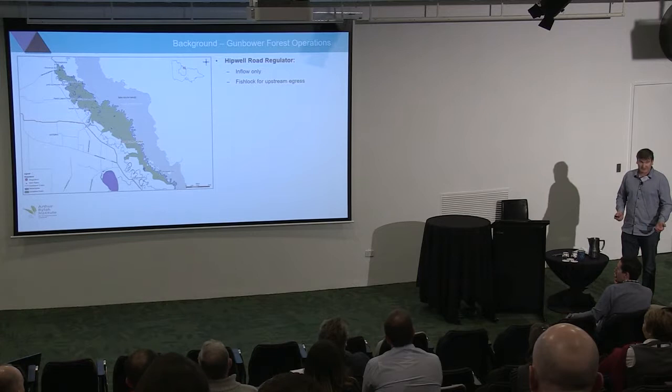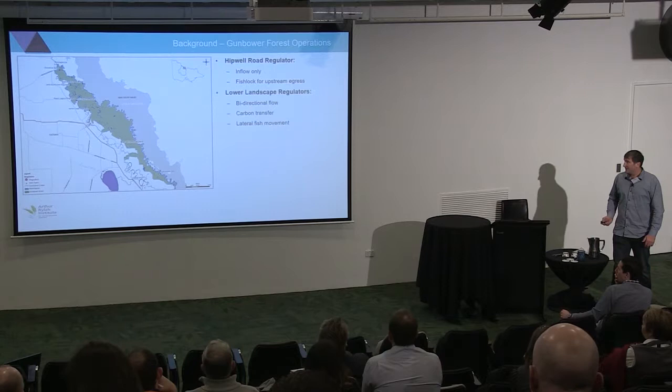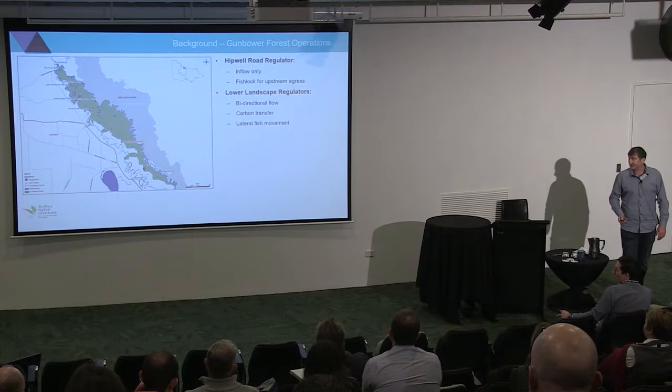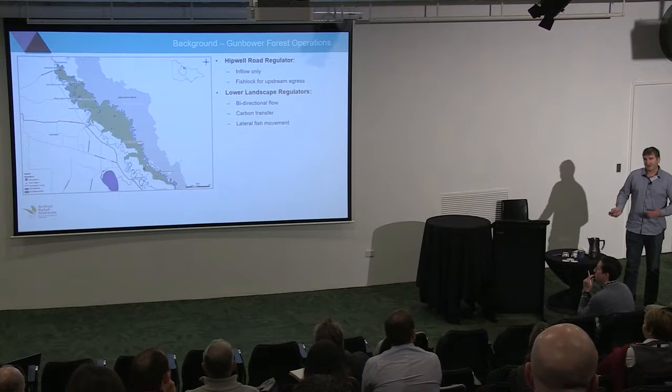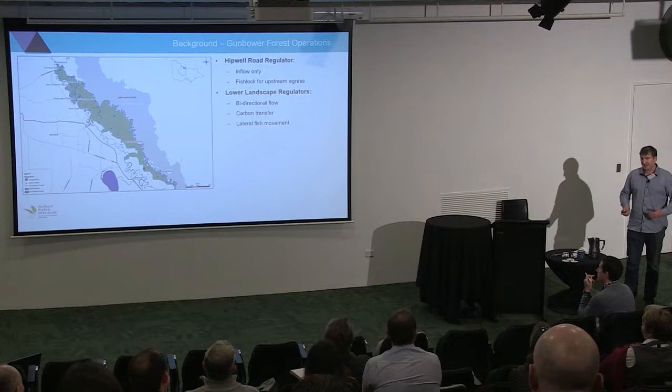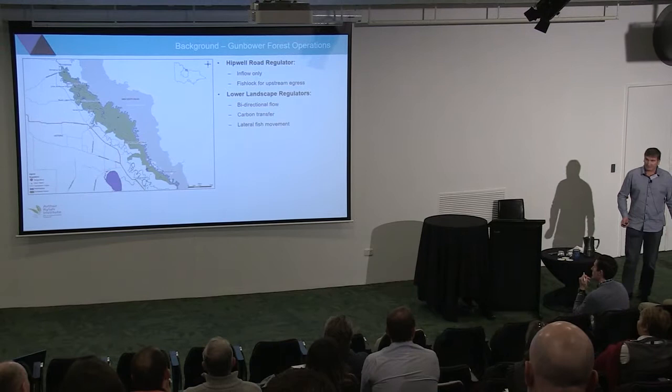There is a fishway there if you want to operate it, but you do have a management option. The other ones are the lower landscape regulators that Charles mentioned, which are on the bottom part. The main ones I want to talk about will be Schillinglaw's, which I'll highlight later. These lower landscape regulators have bidirectional flow, so you've got lateral movement of fish between the forest and the river — though they can be managed to stop it. They're also an important component for getting that carbon transfer Ian talked about yesterday back into the river system.